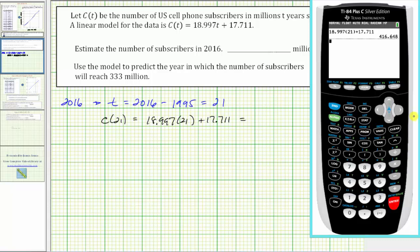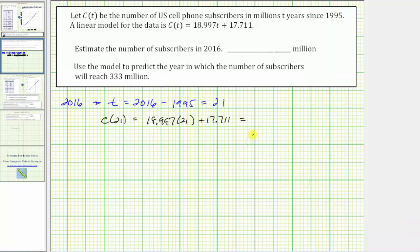c(21) is equal to 416.648. But remember, c(t) is in millions, and therefore the estimate for the number of subscribers in 2016 is 416.648 million.